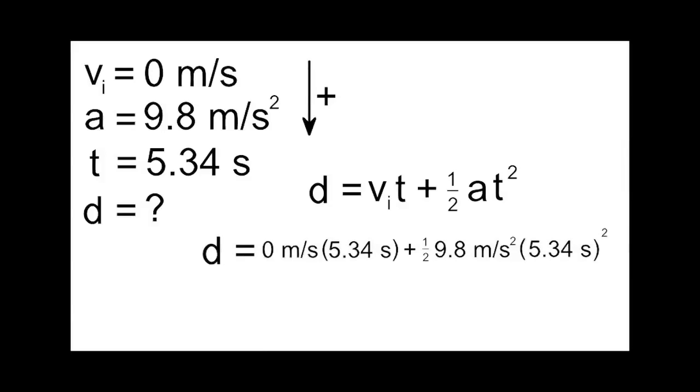Pick an equation. We can do this most easily as a one-step problem using D equals VIT plus one-half AT squared. Then, solve and succeed. Finally, don't forget to box that puppy up.